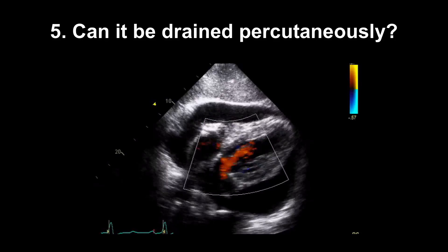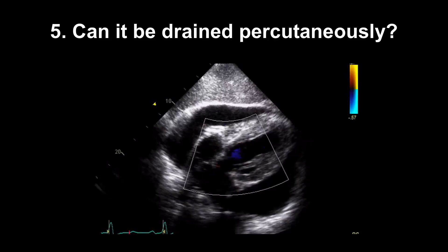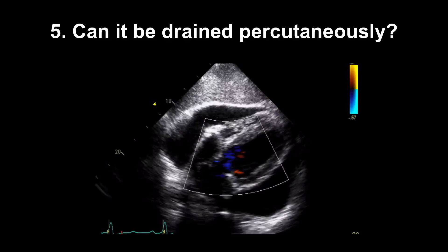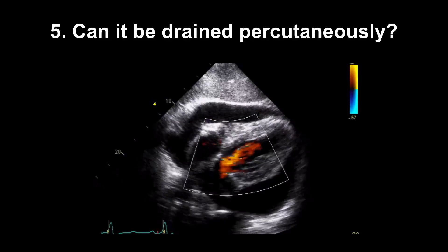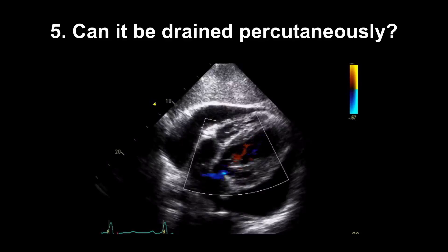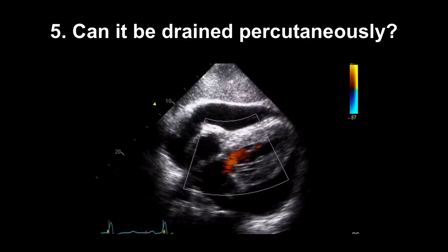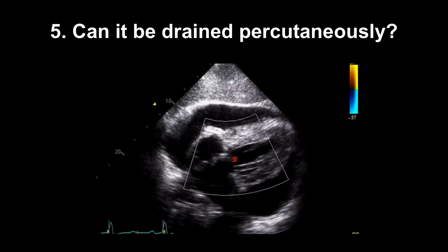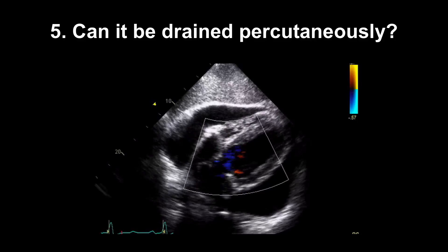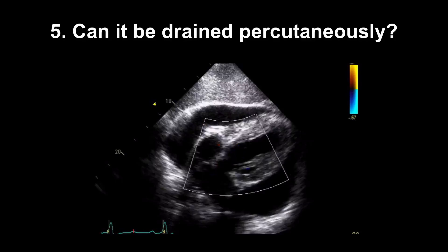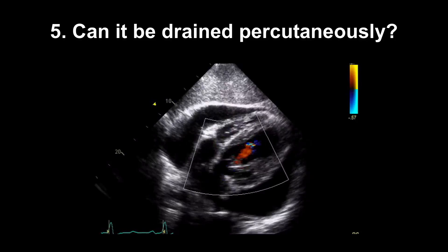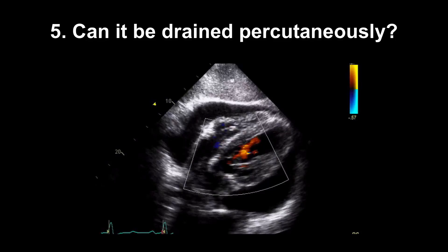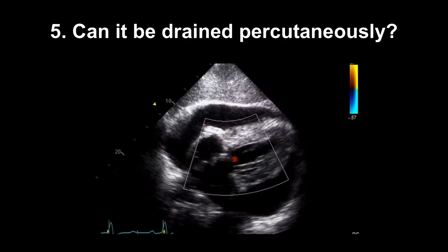It can be quite hard to give a firm opinion on tamponade based on echo alone. The Doppler variations can occur with other pathologies and some changes — such as tiny changes in septal motion — are quite difficult to spot. As long as you've answered the five questions and have your images to support your answer, you can always ask someone else to make the final call.